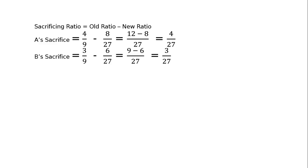B's sacrifice, 3 upon 9 minus 6 upon 27, that is equal to LCM 27. That is 3 times 3 are 9 minus 6, that is 3 upon 27.